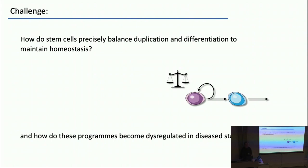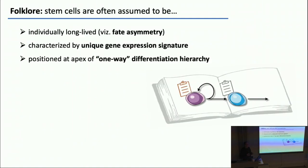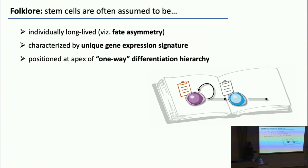This question about how you achieve a perfect balance: when I entered the stem cell field 15 years ago, there was really a kind of folklore about the answer. The folklore went like this — that many stem cell biologists assumed that stem cells were characterized by fate asymmetry. The idea that each and every division should result in asymmetric fate outcome, one cell in the renewing compartment, one differentiating.